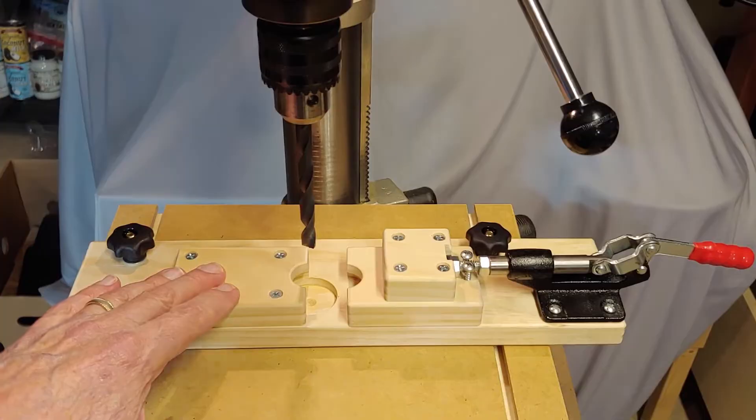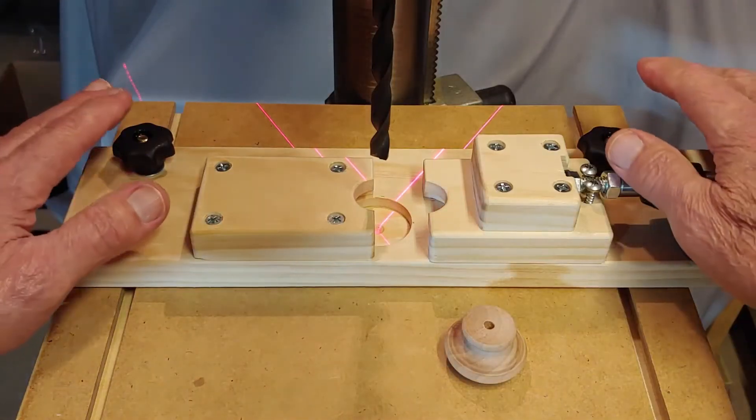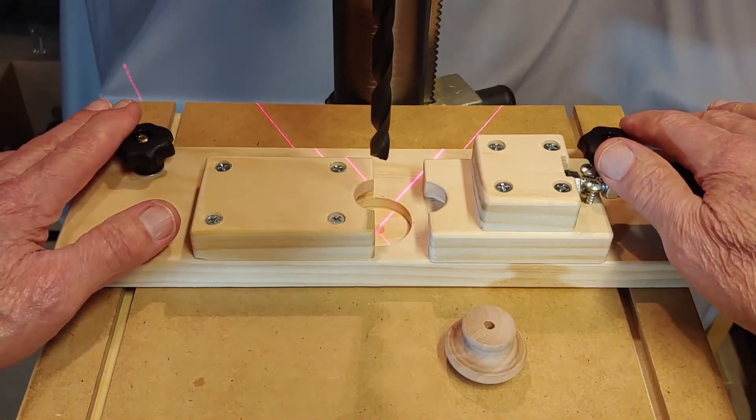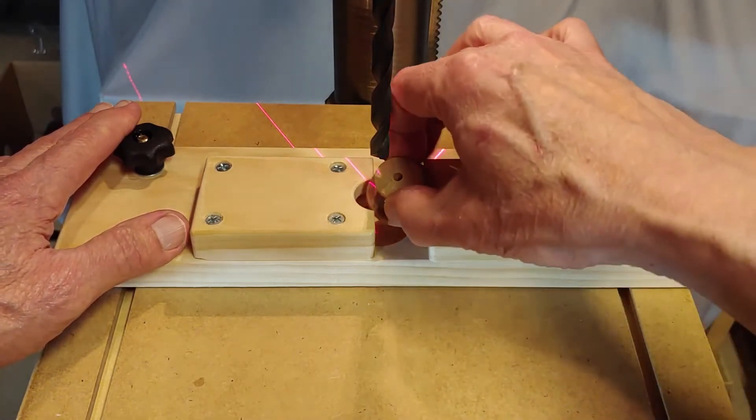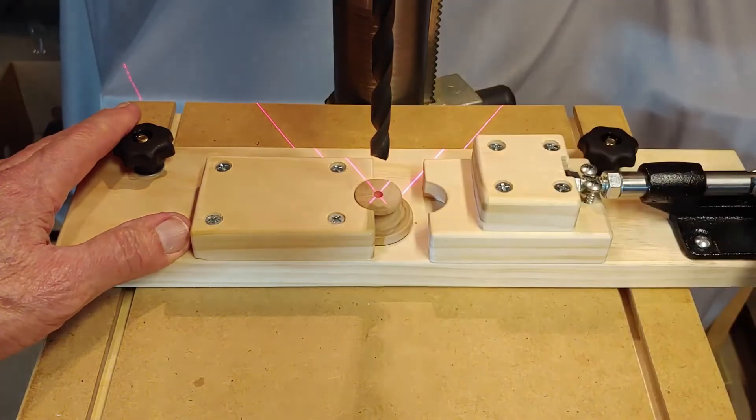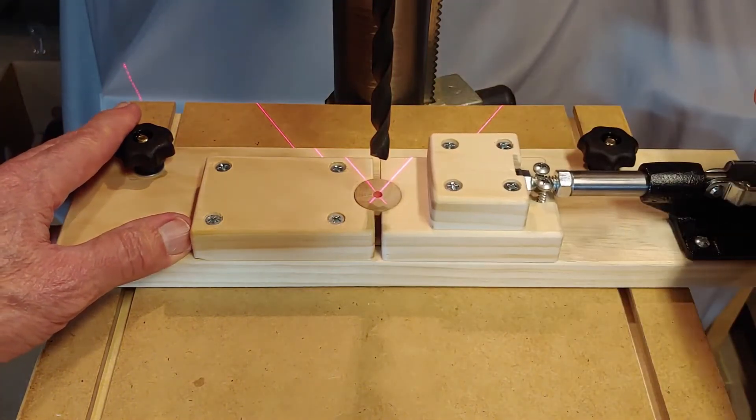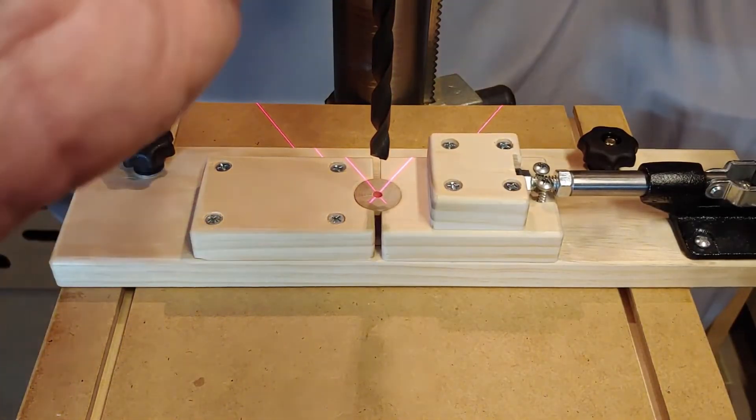Here's how it works. I've already locked the jig onto my drill press table, using the laser crosshairs to position it. I place a knob in the jig and close the right jaw using the clamp lever. Then, I drill to my preset depth.